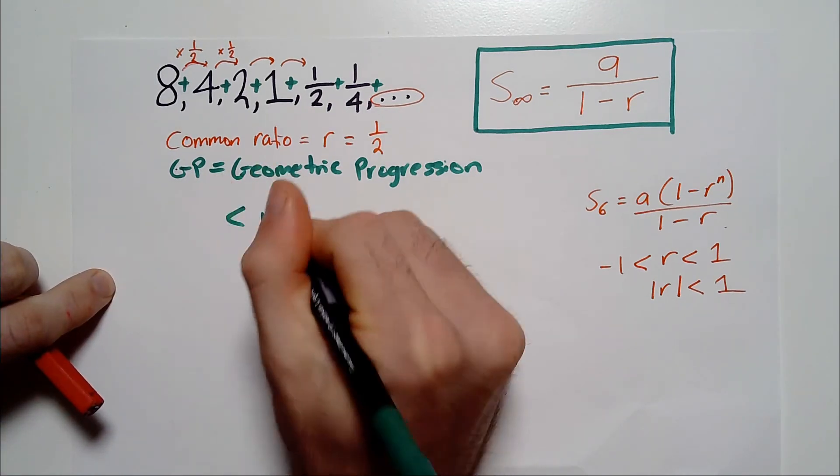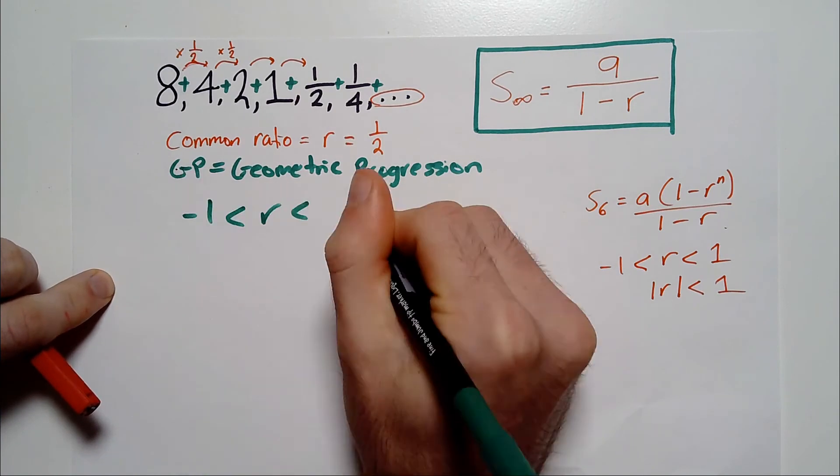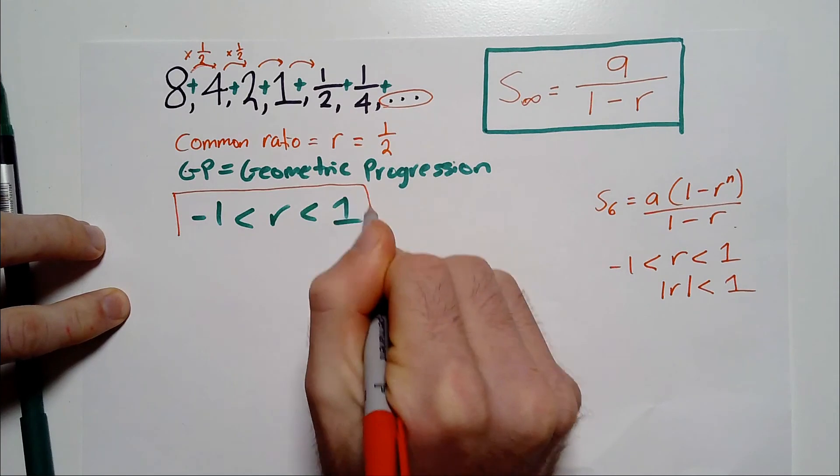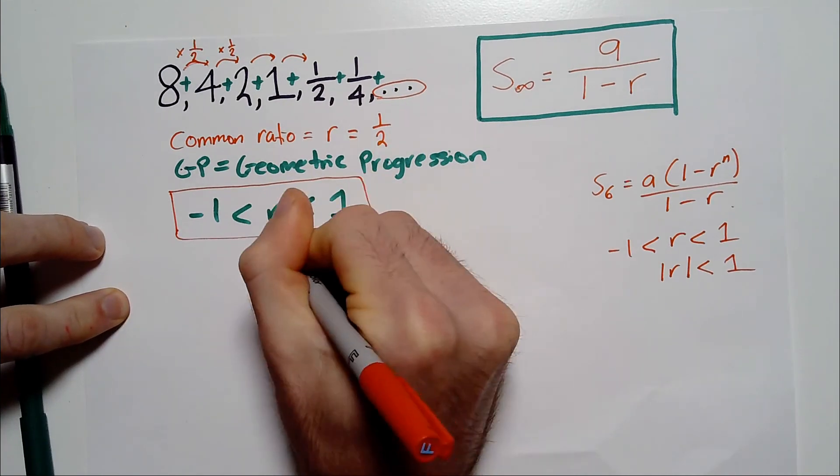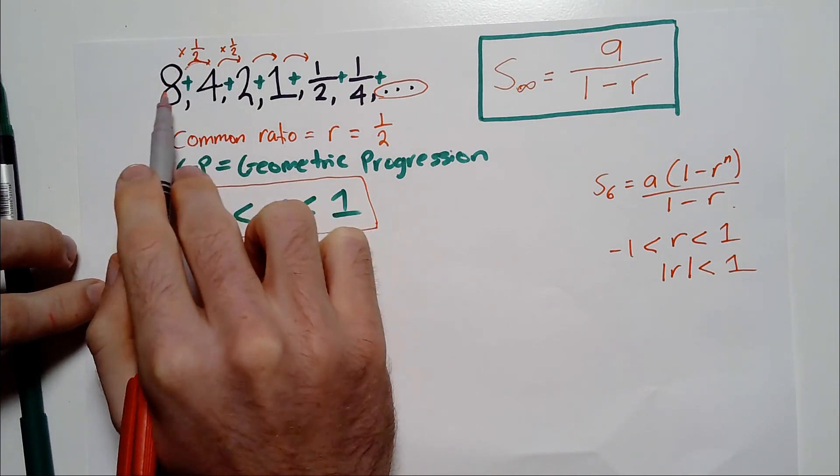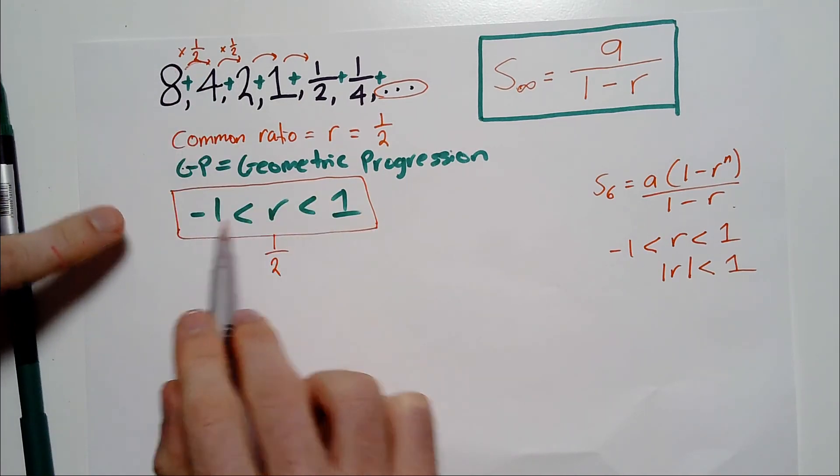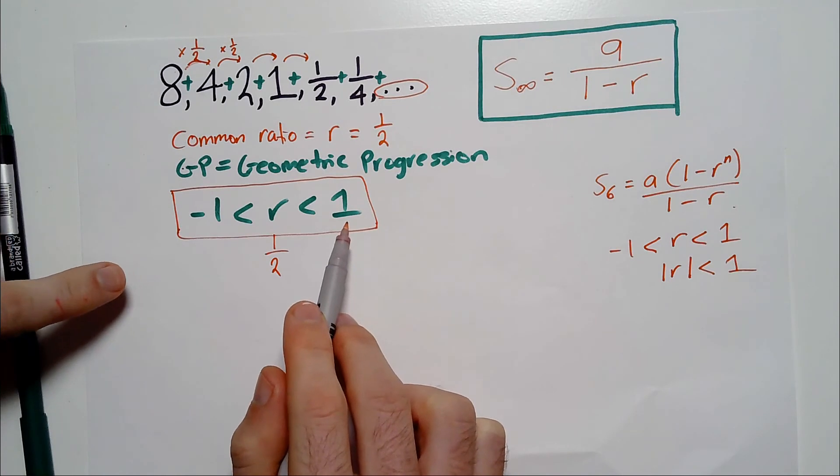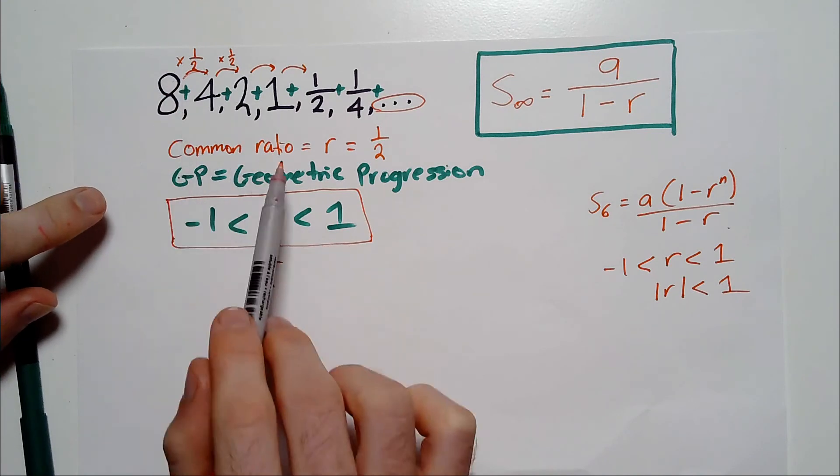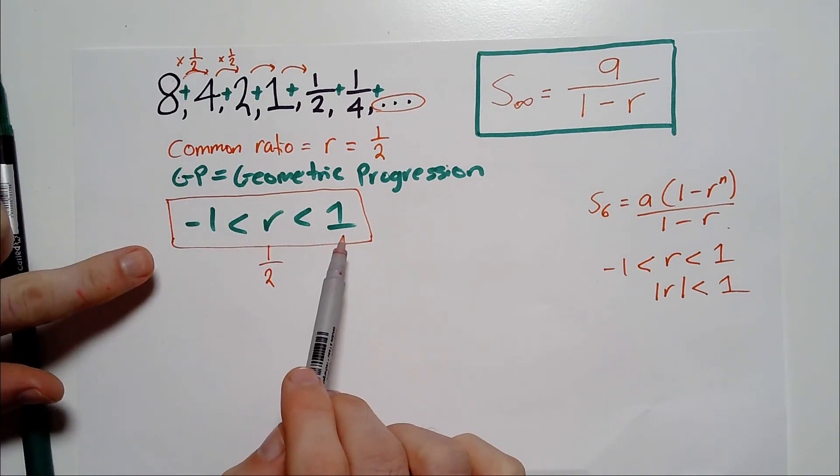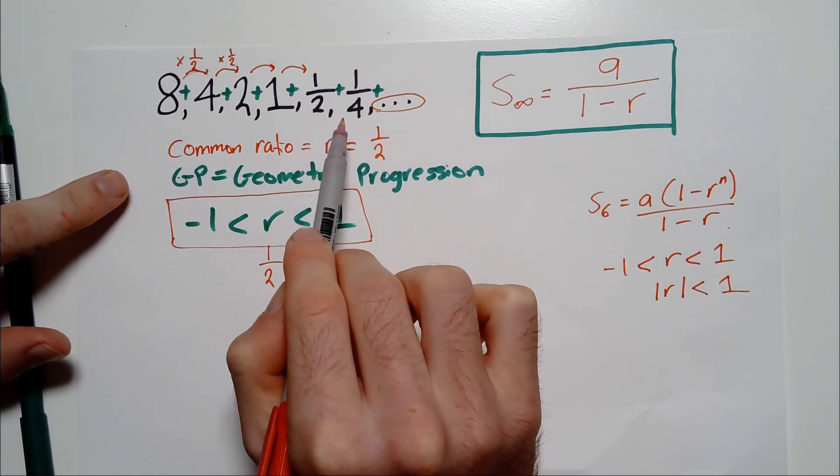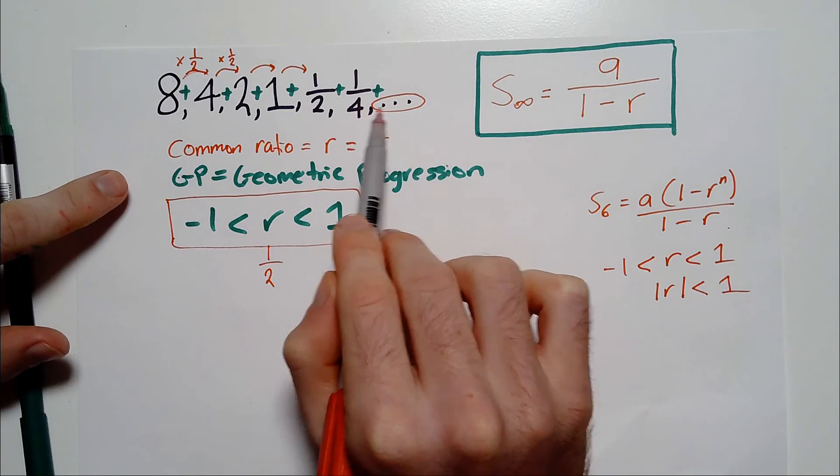The ratio is between negative 1 and 1. That is the fundamental condition here. If you don't have a situation where the ratio, which in this case is again a half, if the ratio, the common ratio, the number that each term is multiplying to get to the next, is not between negative 1 and 1, then you cannot apply this formula. Because the idea here is that by multiplying by a number between negative 1 and 1, by doing that, what's actually going to happen is you can see it here, we're really going to get closer and closer to 0 in terms of the numbers that are being added.